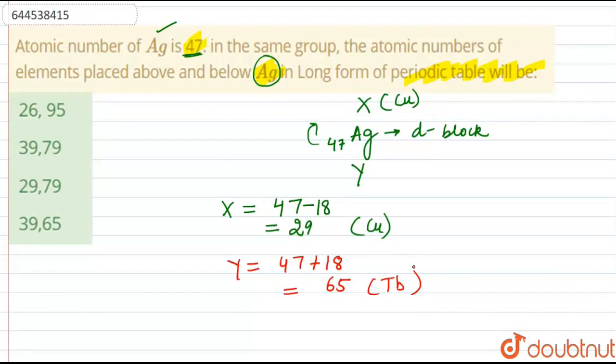But it belongs to the inner transition elements. That is, it is present in lanthanoids. So in periodic table, this element is not present below silver.